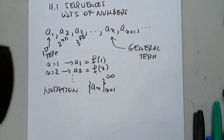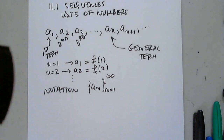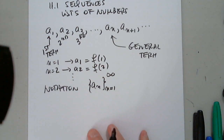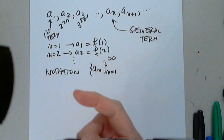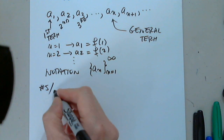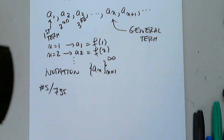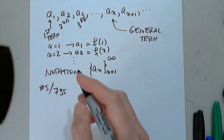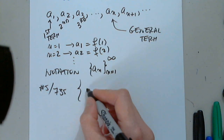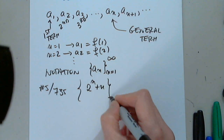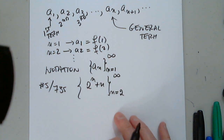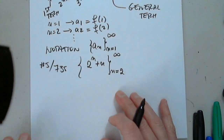I would like us to look at an example before we continue to find the general term. On page 735, number 5, we are given the general term 2 to the n plus n, from n equals 2 to infinity. They're asking us to find the first five terms.